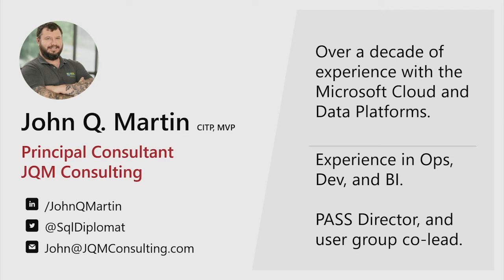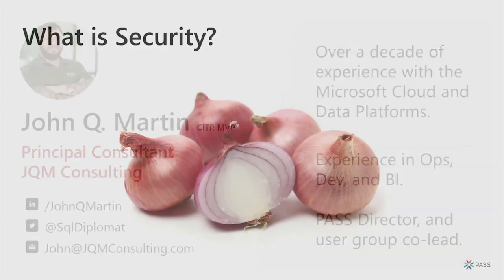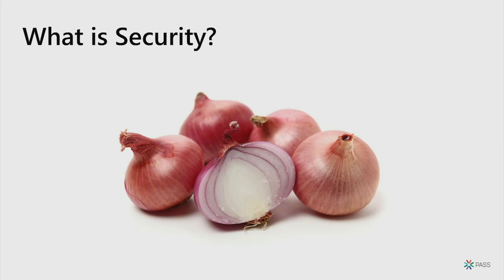Security. A lot of people turn around and say security is like an onion — it has layers. Data, or whatever you want to protect, is in the middle, and we've got an outer layer and then we've got various layers within that. I think that's wrong. When it comes to security, it's more like Swiss cheese.